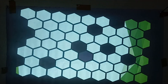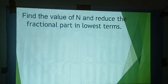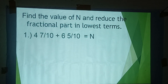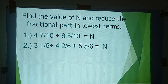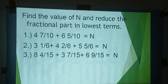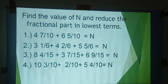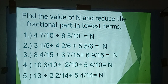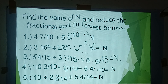Find the value of N and reduce the fractional part to lowest terms. Number 1: 4 and 7/10 plus 6 and 5/10 equals N. Number 2: 3 and 1/6 plus 4 and 2/6 plus 5 and 5/6 equals N. Number 3: 8 and 4/15 plus 3 and 7/15 plus 6 and 9/15 equals N. Number 4: 10 and 3/10 plus 2/10 plus 5 and 4/10 equals N. Number 5: 13 plus 2 and 2/14 plus 5 and 4/14 equals N.